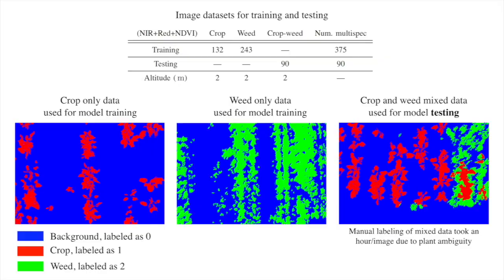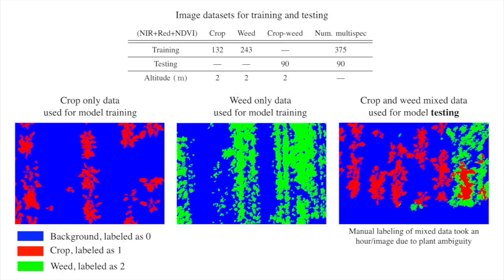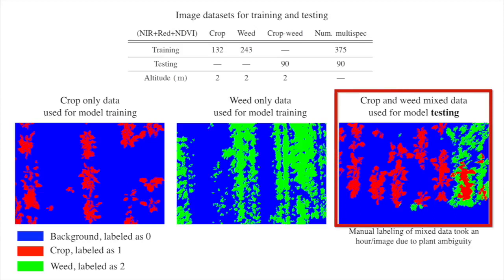We have three data sets — crop only, weed only, and mixed — as shown in the picture. For the first two data sets, we performed automated vegetation detection to generate training data sets, as shown before. For the mixed crop-weed data set, unfortunately, we have to perform manual annotation, since NDVI cannot properly distinguish between crop and weed plants. The labeling procedure is very labor-intensive due to its pixel-wise nature and ambiguities between the two classes.